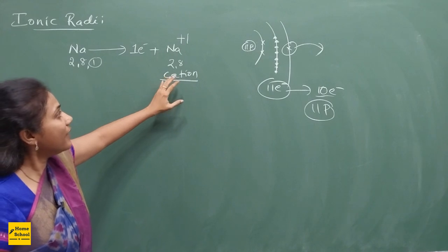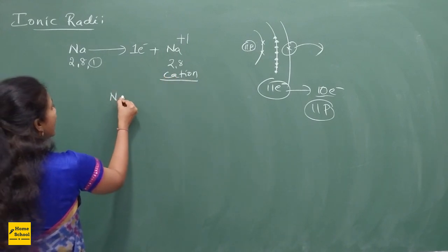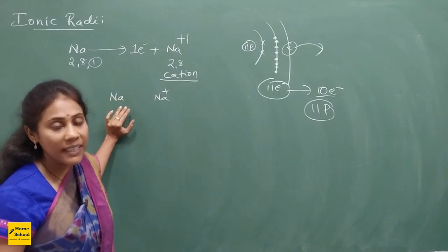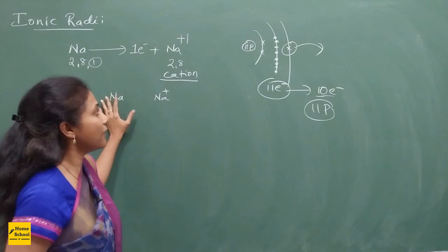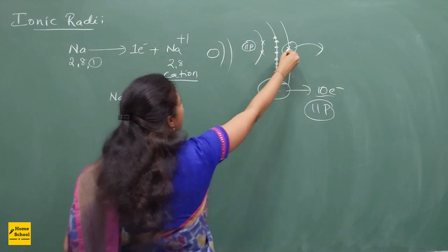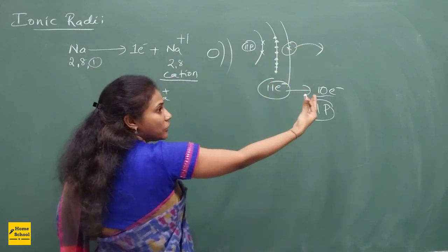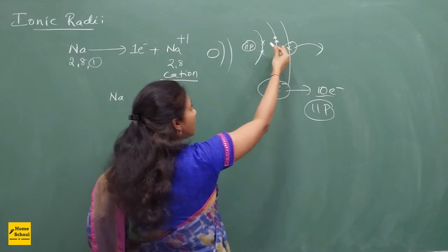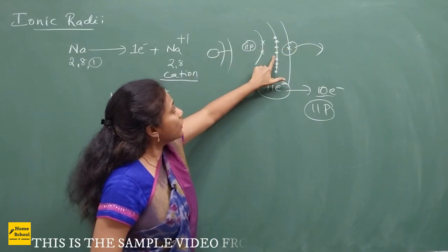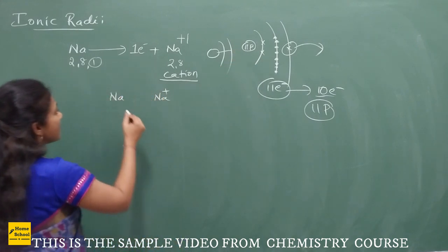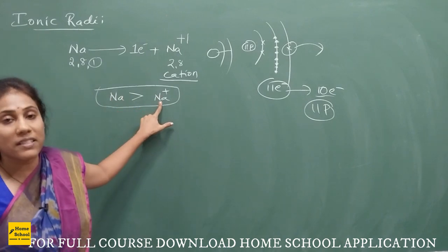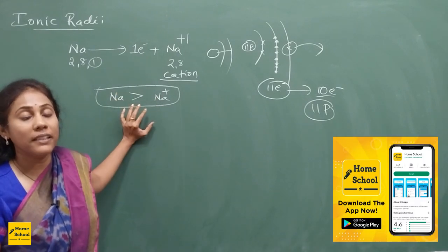You have one proton extra — one positive charge extra — so you indicate plus 1 and it is called a cation. Anything which has got a positive charge is called a cation. This is a sodium cation. Now if you compare sodium and Na+ cation and ask which is smaller in size, in Na+ you actually have only two shells because the last shell has no electrons. So obviously neutral atoms have a greater radius compared to cations. This fact is very important.